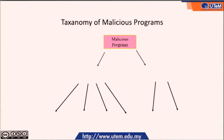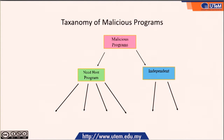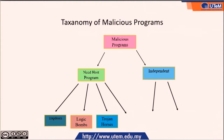Next, we go on to the taxonomy of malicious programs. Malicious programs can be divided into two kinds: the need-host program and the independent types of malicious code. The need-host program can be further divided into trapdoors, logic bombs, Trojan horses, and viruses, whereas the independent malicious programs can be divided into bacteria and worms.